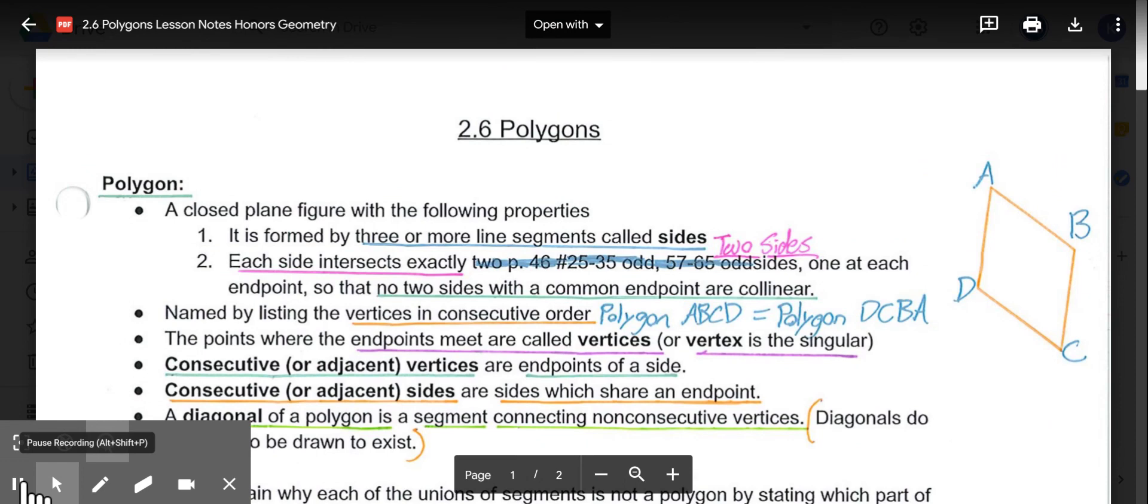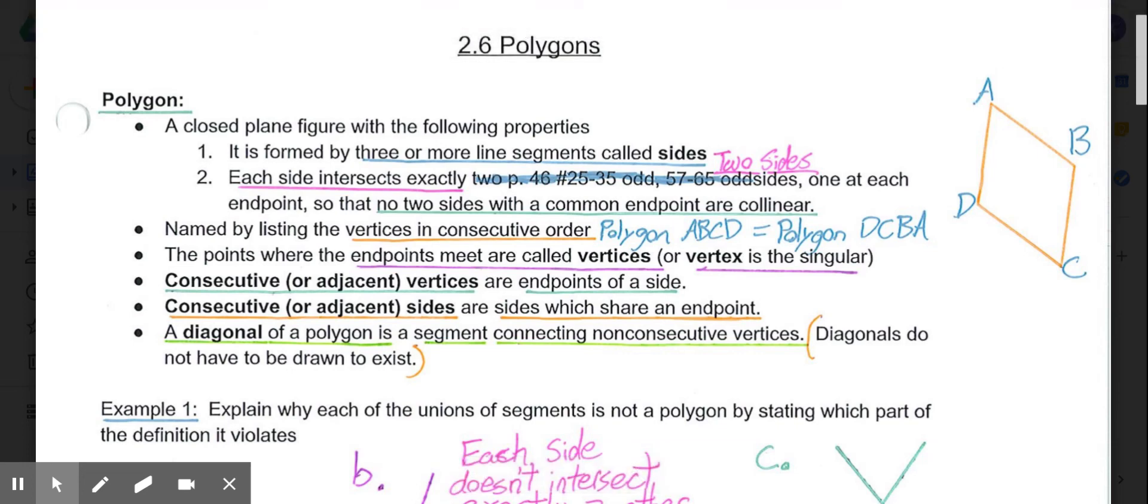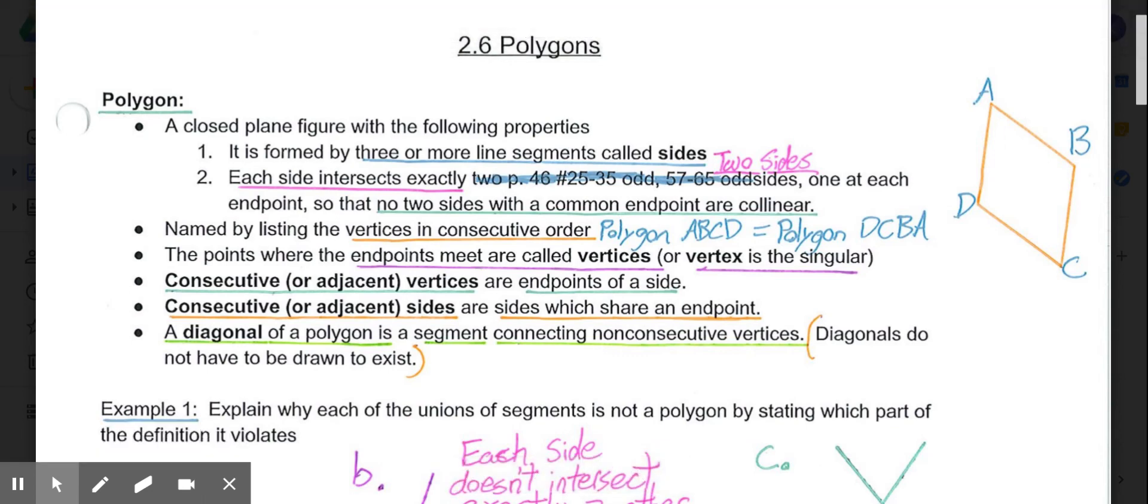As you're working through the practice problems, the most important things to keep in mind are these properties that make up the definition of polygons. And then, the idea of diagonals and consecutive vertices, or consecutive or adjacent sides.